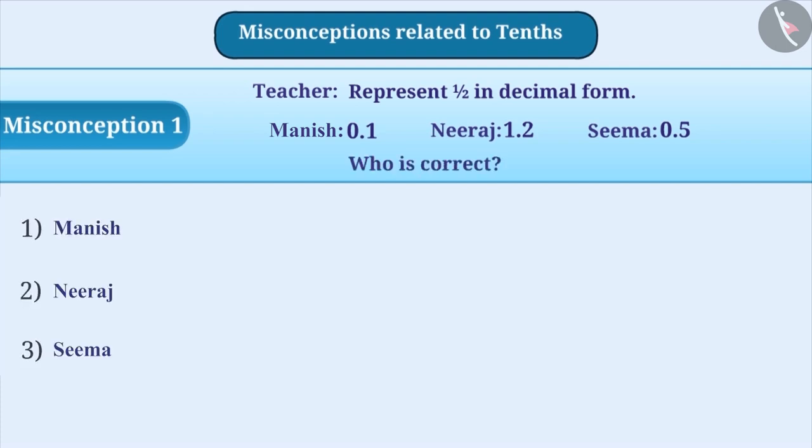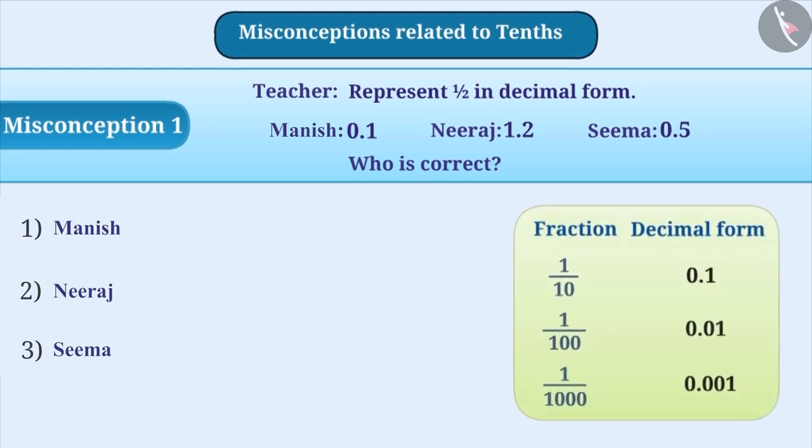Students fail to understand that to represent fraction in decimal form, the denominator of fractions must be any of the numbers like 10, 100, 1000, etc. Some students ignore that here the denominator is not 10 and they write the numerator of 1 by 2 after the decimal point and write the decimal form of 1 by 2 as 0.1.